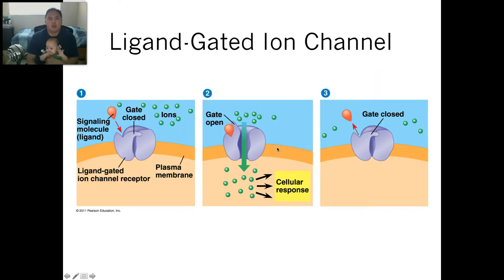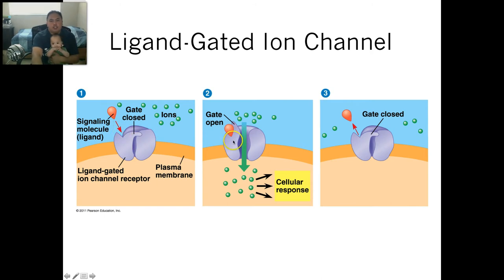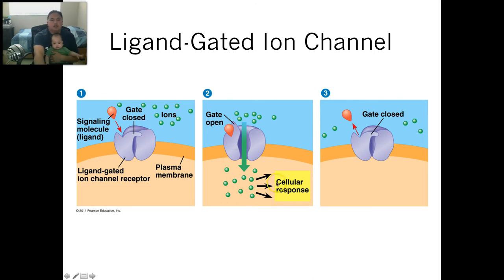The third receptor type, which is the easiest, is a ligand-gated ion channel. You have a gate that's closed. When the ligand comes in, it forces the ion channel to open, which means ions can rush in, and these ions force the cell to do something.